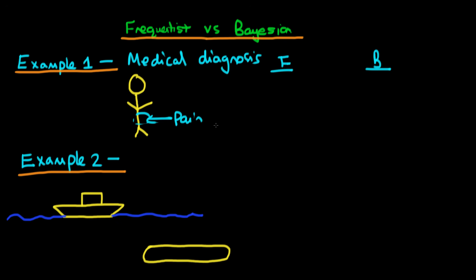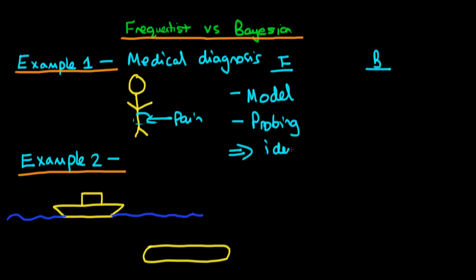Let's first think about the frequentist approach to diagnosis. The doctor would have some sort of model for the cause of this particular pain — a mental model which could explain all possible causes of stomach pain. The doctor would perhaps feel your stomach, probing with fingers and getting your feedback, then use that feedback as an input into the model to help identify the source of the pain. So we are purely using information available to us at the time via this probing.